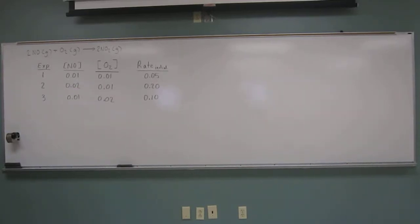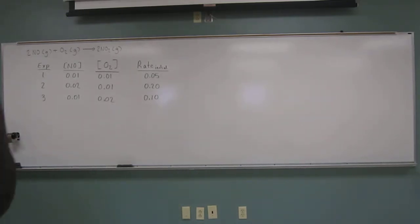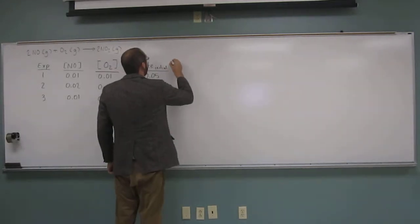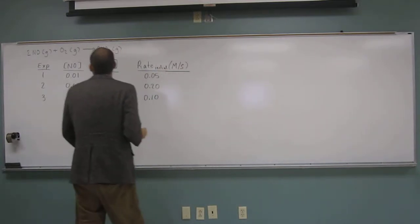Let's do one of these problems determining the rate orders. Consider the reaction: 2NO gas plus O₂ gas goes to 2NO₂ gas. A collection of kinetics data was shown — we have rate data and concentration data. The rate is in units of molar per second, and these are the initial rates.